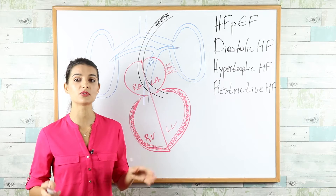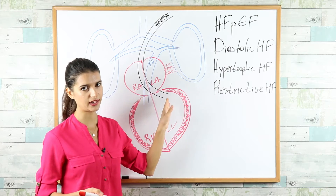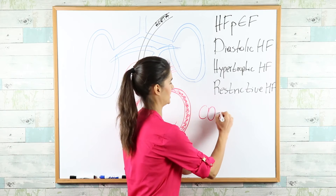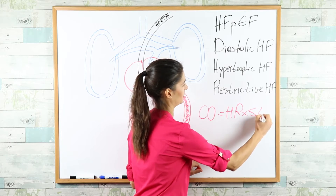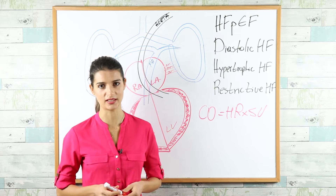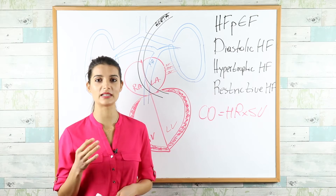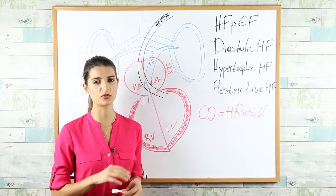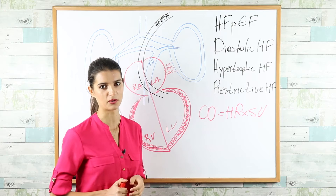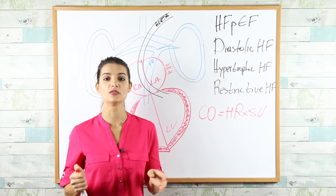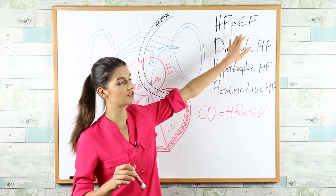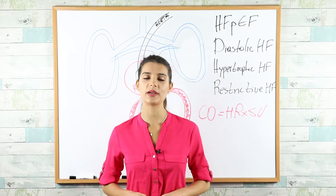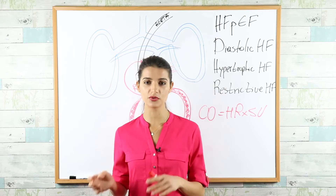To maintain cardiac output — calculated as heart rate times stroke volume — patients show increased heart rate as compensation. Since the heart has no problem contracting and is hypertrophied, it contracts with even more force than normal. That's why ejection fraction is preserved or even higher than 55% in these patients.